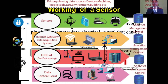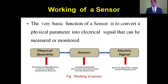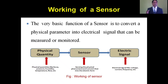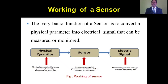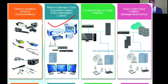Now it's quite interesting to know how a sensor works. A very basic function of a sensor is to convert a physical parameter into an electrical signal that can be measured or monitored. In the figure, we can see there is a physical quantity — which can be force, pressure, humidity, temperature, flow, gas, smoke, or whatever. The sensor takes that physical parameter and converts it into an electrical signal in the form of voltage or current, and gives it to the data acquisition system, where the data acquisition system converts it into digital form from analog form.